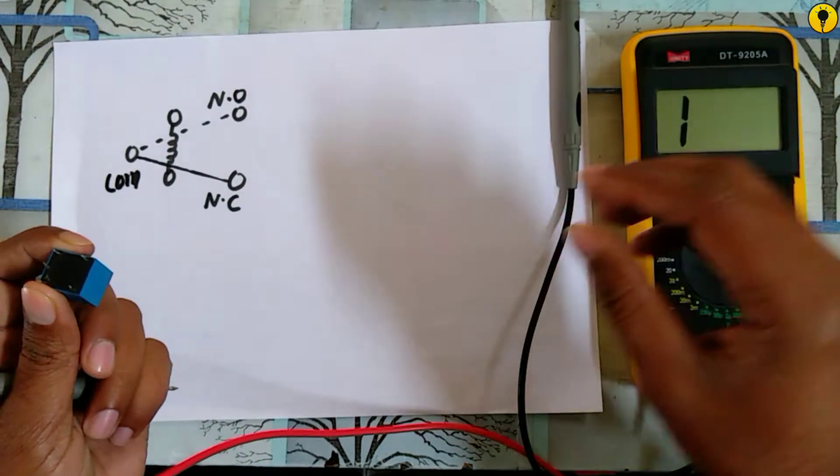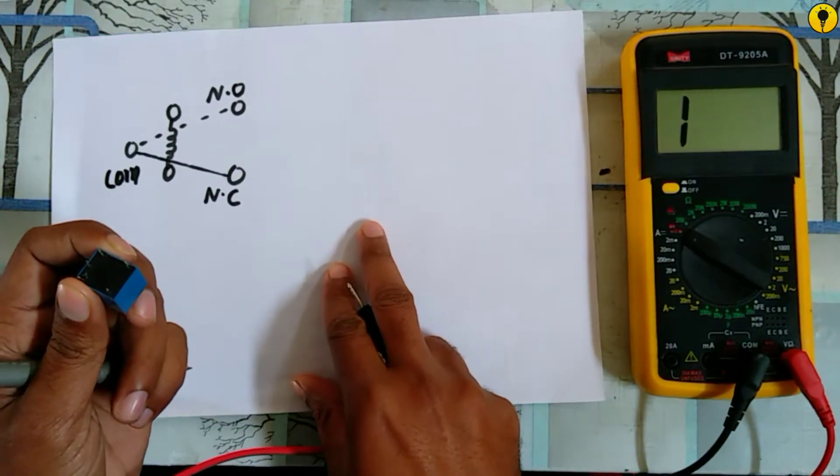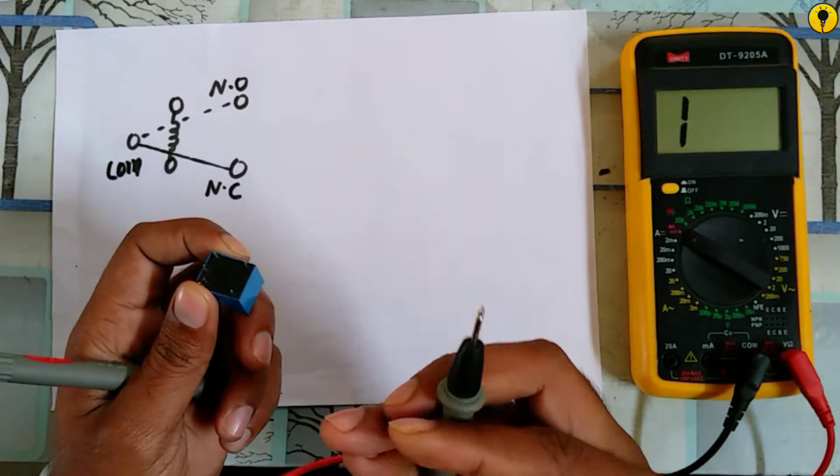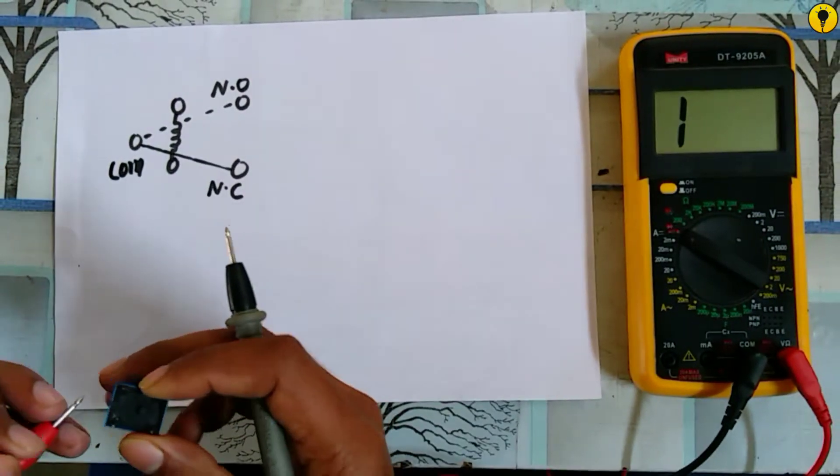Normally open means it doesn't show any reading on the multimeter. Normally closed means it shows a beep sound or continuity when we apply the probes on these terminals.